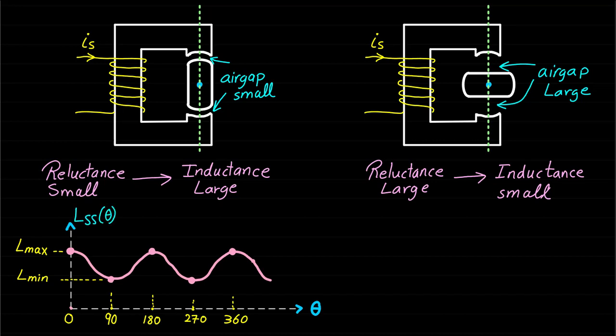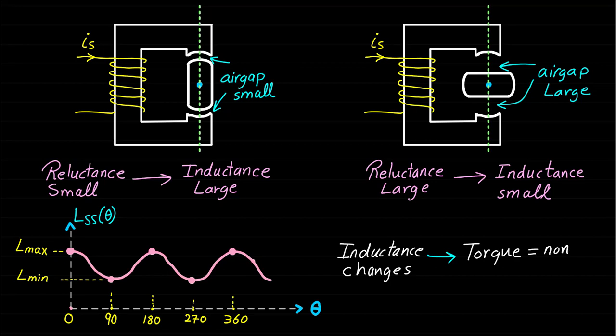Now since the stator self-inductance changes and it is not constant, we expect a torque component produced because of the change of the stator self-inductance. The torque component which is developed as a contribution of the change of stator self-inductance can be called reluctance torque.